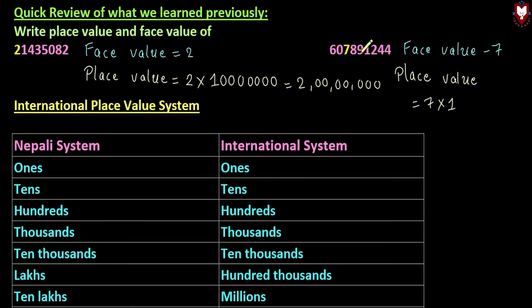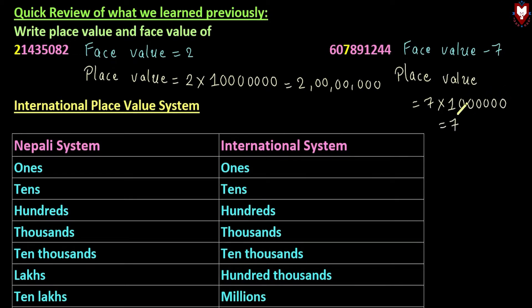Now here we have this number. We count the digits: 1, 2, 3, 4, 5, 6 — keeping 0, then counting positions 1, 2, 3, 4, 5, 6. So here we have place value: 7 into positions 1, 2, 3, 4, 5, 6.